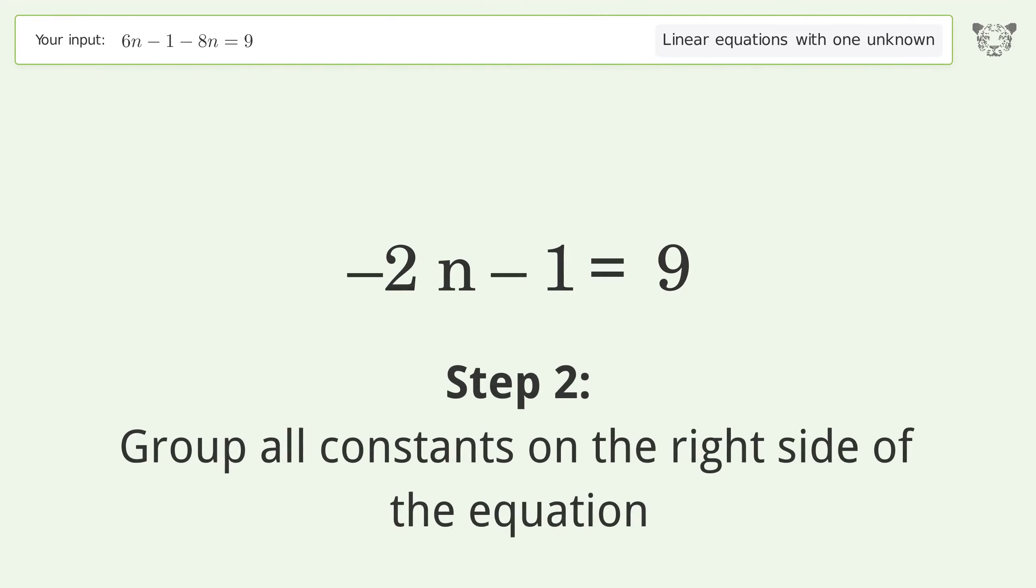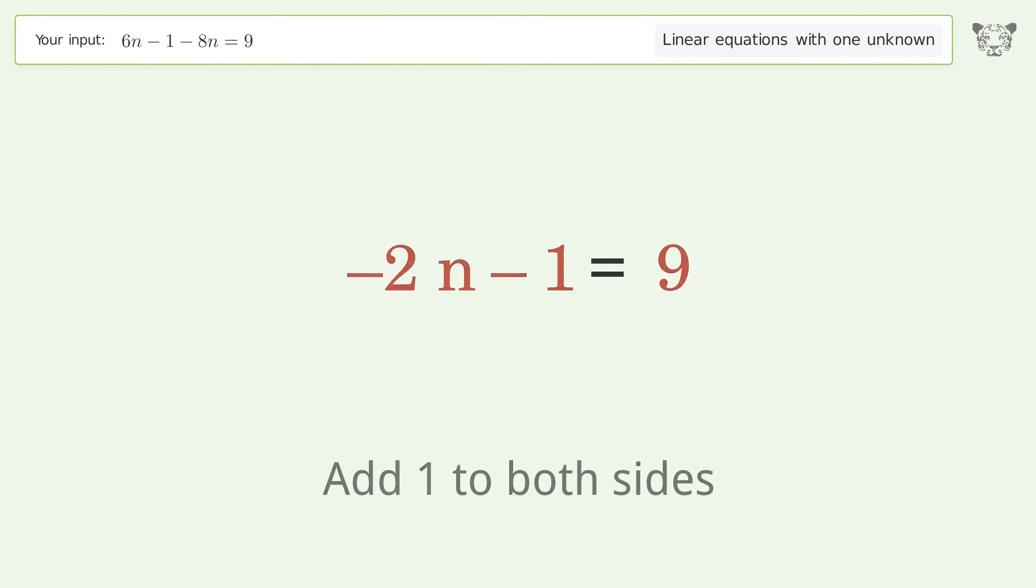Group all constants on the right side of the equation. Add 1 to both sides. Simplify the arithmetic.